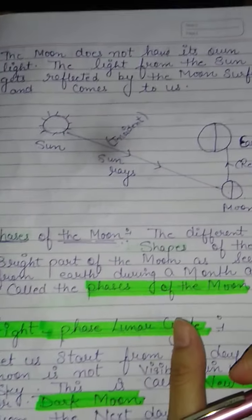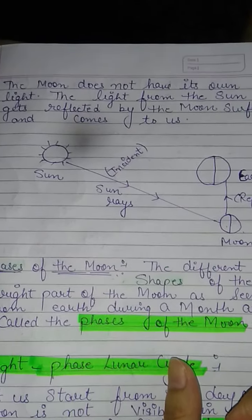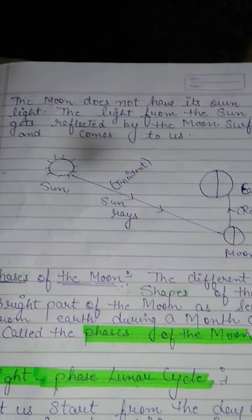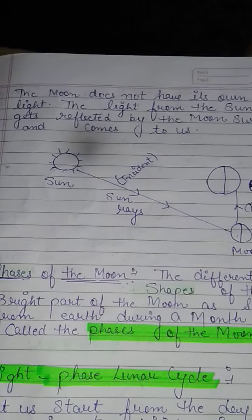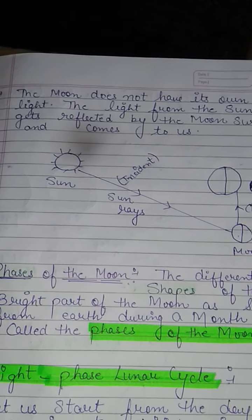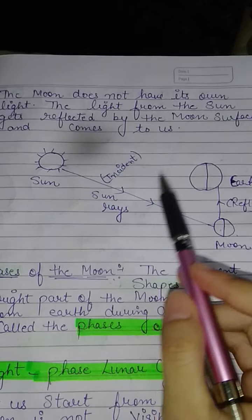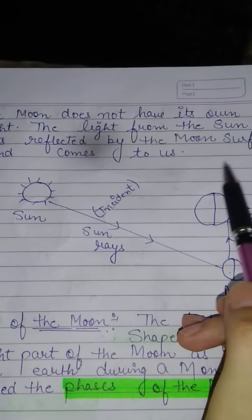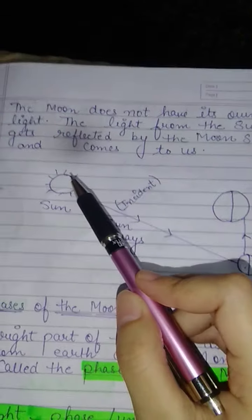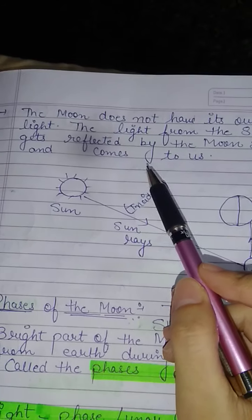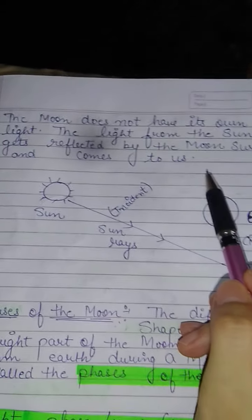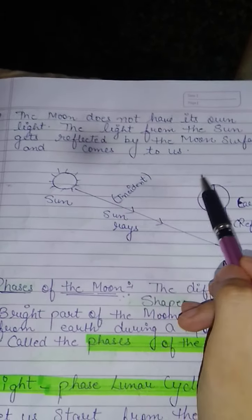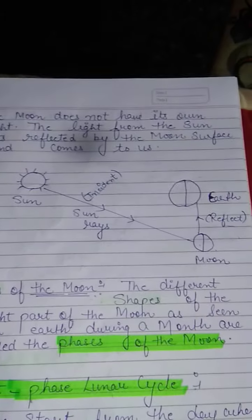The Moon does not have its own light. The light from the Sun gets reflected by the Moon's surface and comes to us.